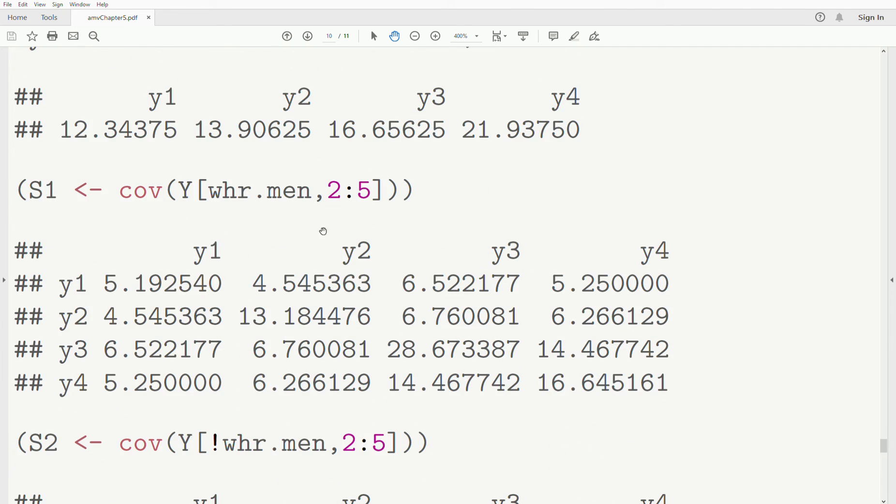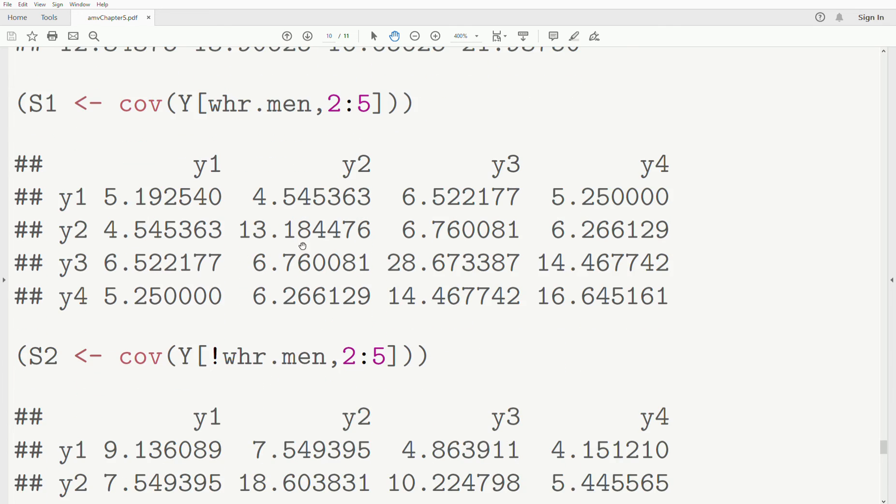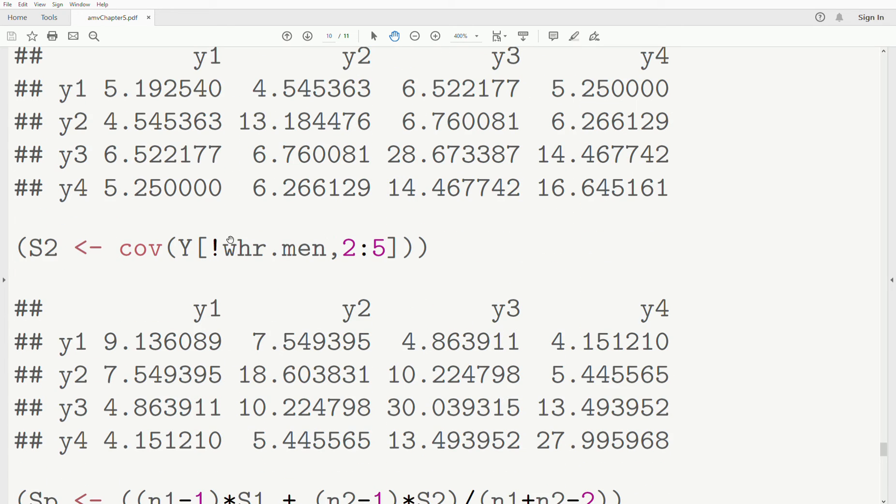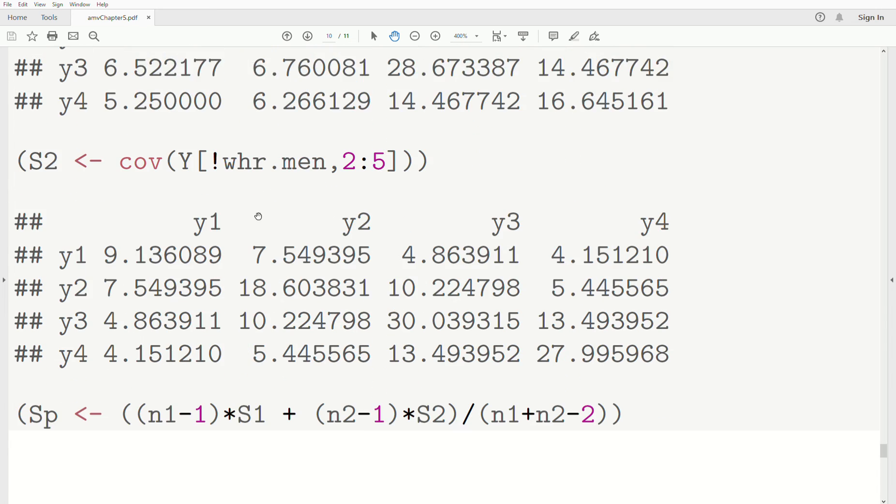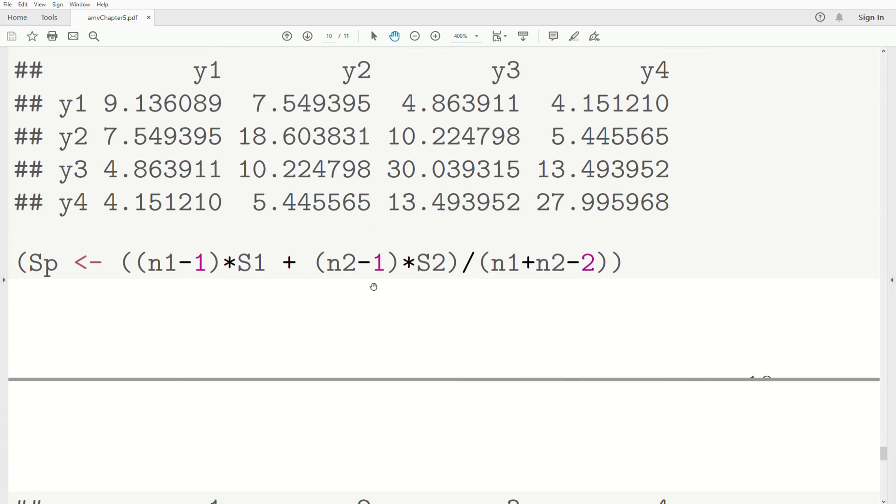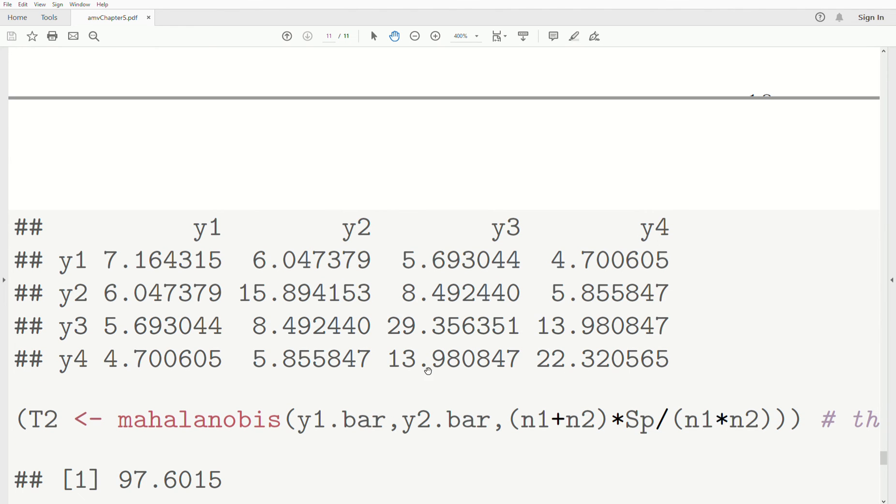We want the sample covariance matrix for men, that's this. The sample covariance matrix for women. To do the pooled sample variance, we take N1 minus 1 times S1, N2 minus 1 times S2 and divide it by N1 plus N2 minus 2. That creates this pooled covariance matrix.